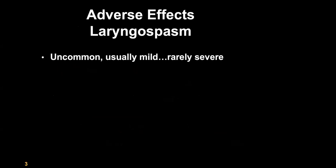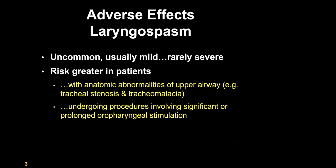Laryngospasm is happily uncommon, and when it does occur it's usually mild and rarely produces airway obstruction. Those at greater risk include patients with anatomic abnormalities of the upper airway such as congenital or acquired tracheal stenosis or tracheomalacia. It can also be encountered with significant or prolonged oropharyngeal stimulation, so suction the oral cavity as needed but try to limit frequent stimulation of oropharyngeal tissues.